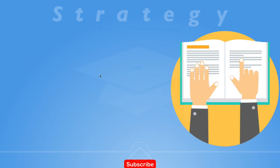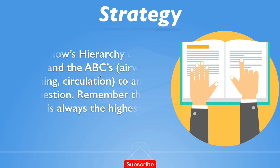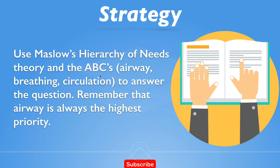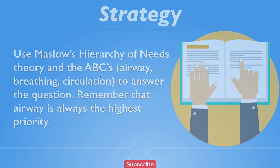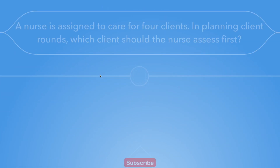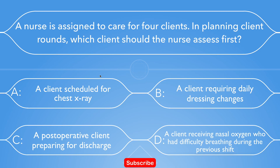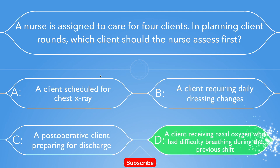As a strategy to answer this question, use Maslow's hierarchy of needs theory and the ABCs. Remember that airway is always the highest priority. In planning client rounds, the nurse should attend to the client who has been experiencing an airway problem first. This makes option D our only possible answer — a client receiving nasal oxygen who had difficulty breathing during the previous shift. If you chose option D, then you answered correctly.